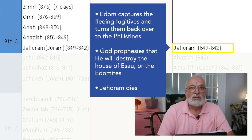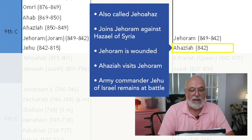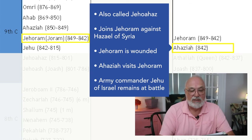Jehoram of Judah dies of an illness after two years. Ahaziah, also called Jehoahaz, becomes king in Judah. Ahaziah joins Jehoram of Israel against Hazael of Syria. Jehoram is wounded; Ahaziah visits him. Meanwhile, Jehu, an army commander for Israel, remains at the battle.